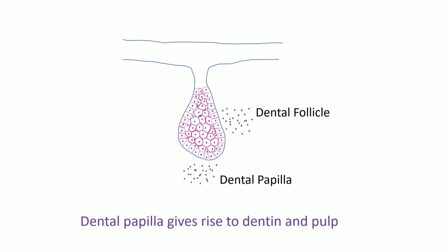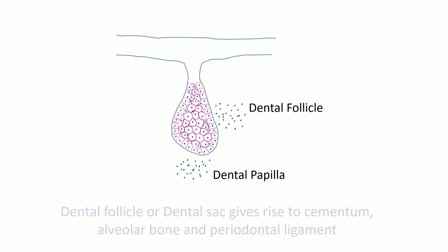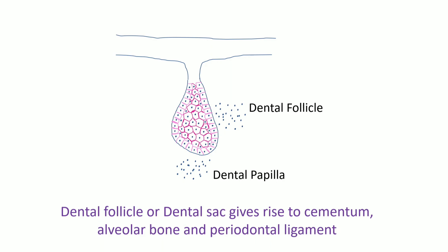Then the formation of dental papilla and dental follicle occurs. These cells are ectomesenchymal cells. Dental papilla gives rise to the dentin and pulp. Dental follicle, otherwise called as dental sac, gives rise to the cementum, alveolar bone, and periodontal ligament.